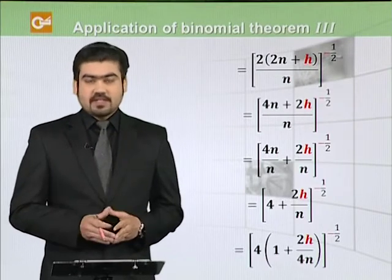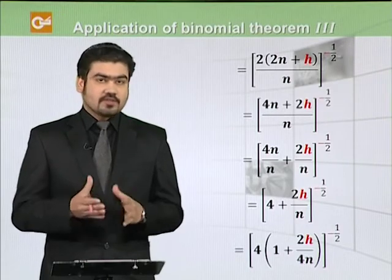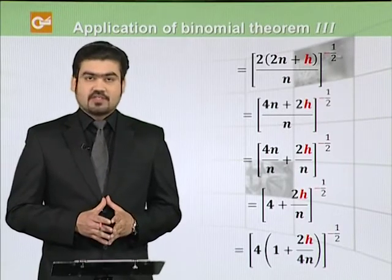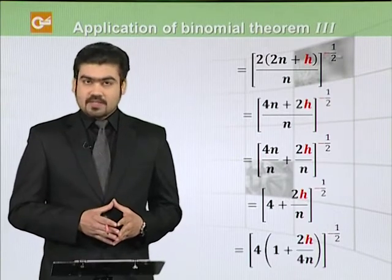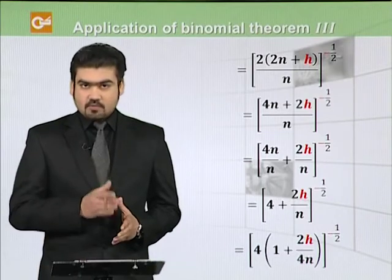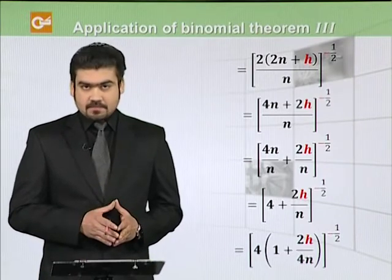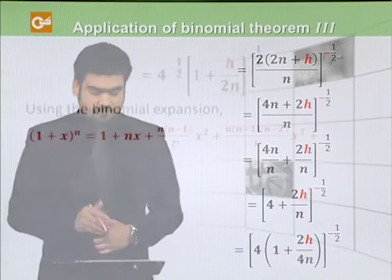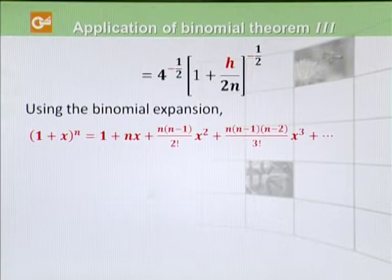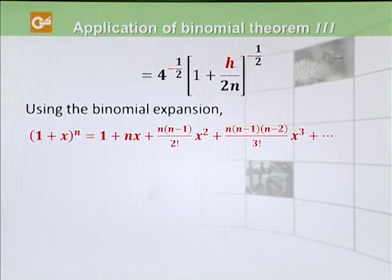The general binomial expansion we apply here is: (1 plus x) raised to power n equals 1 plus nx plus n(n minus 1) over 2 factorial times x squared, and so on. We extract the 4 raised to power minus 1 over 2 factor, which gives us (1 over 2), and the remaining expression is (1 plus h divided by 2n) raised to power minus 1 over 2, on which we now apply binomial expansion.